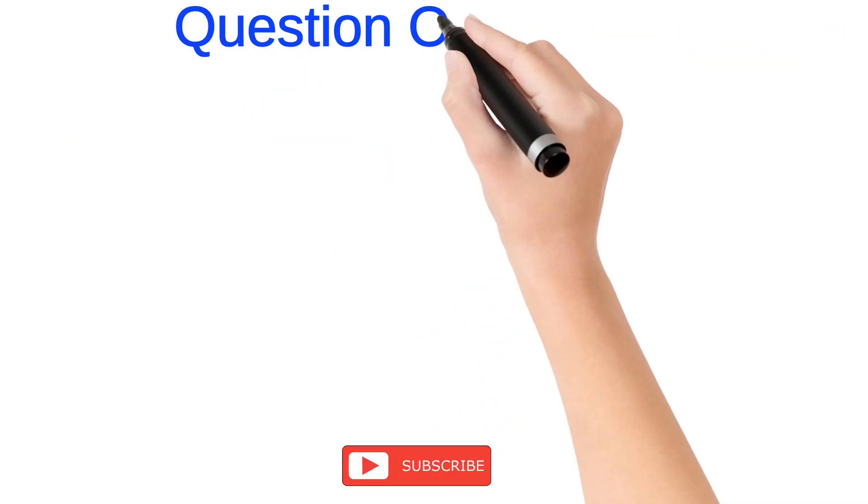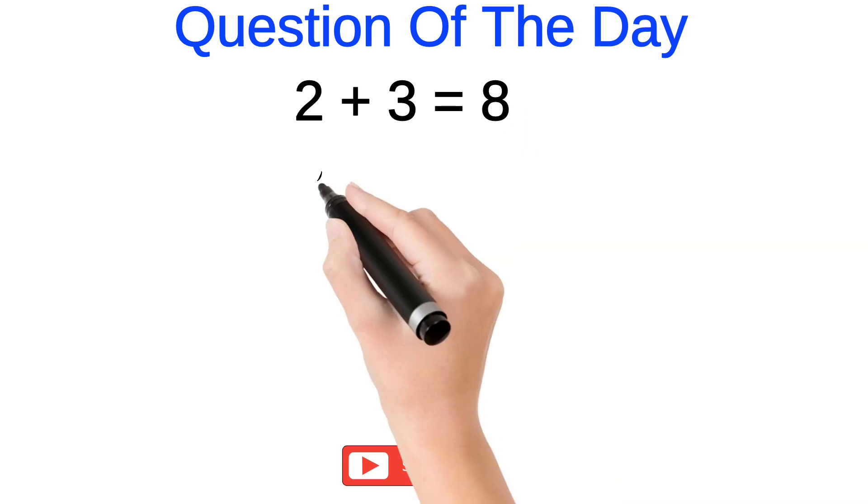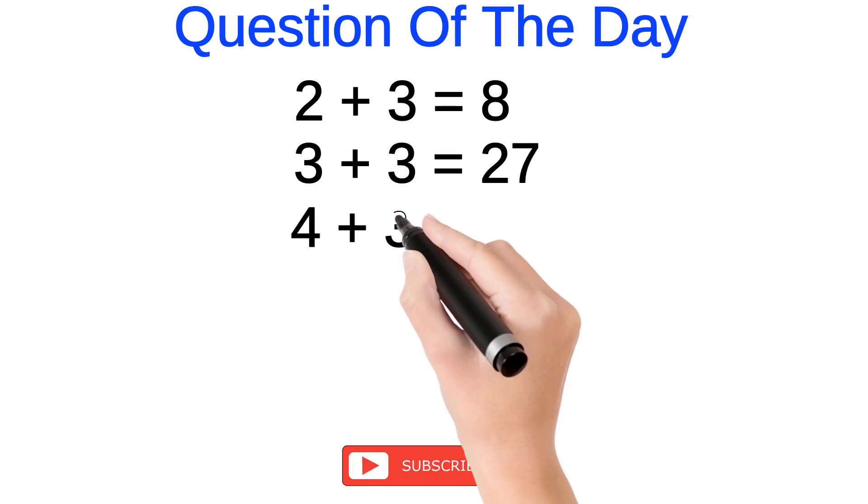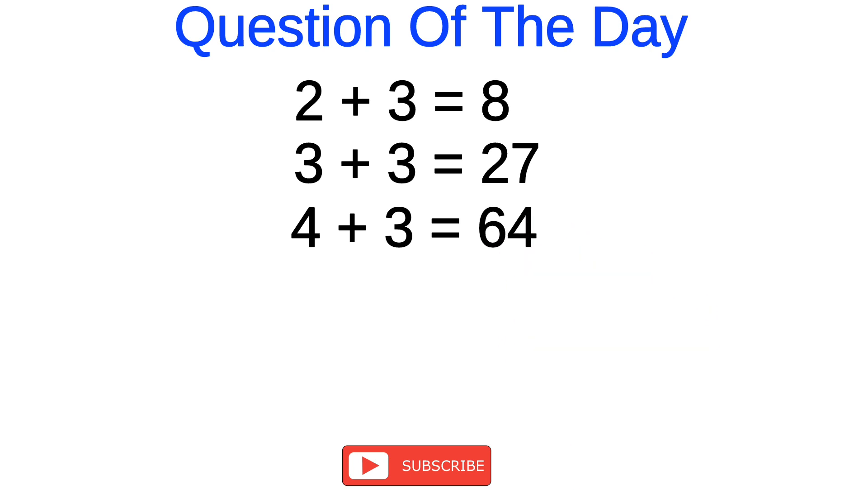Question of the day: If 2 plus 3 equals 8, 3 plus 3 equals 27, and 4 plus 3 equals 64, then what will be the value for 5 plus 3? Your options are as follows: option A, 5; option B, 25; option C, 125; option D, 625.